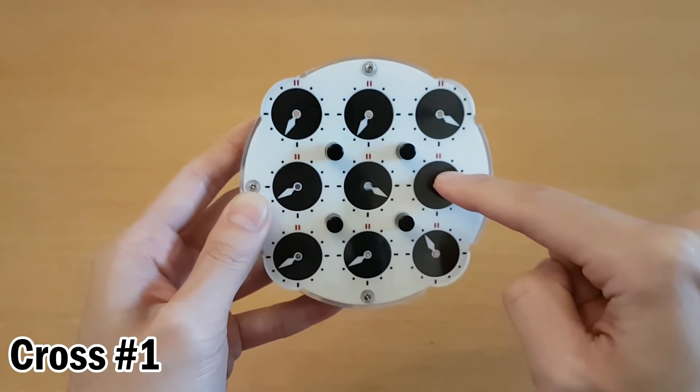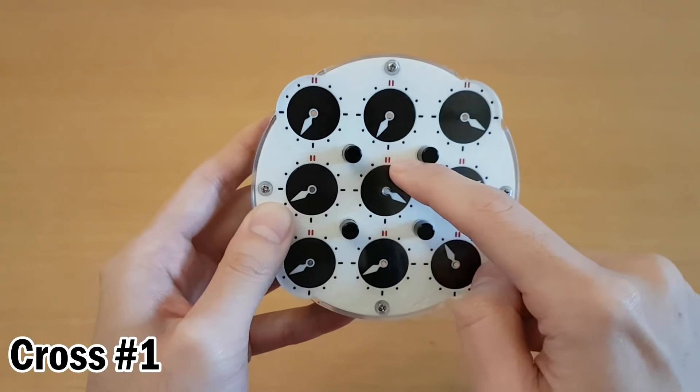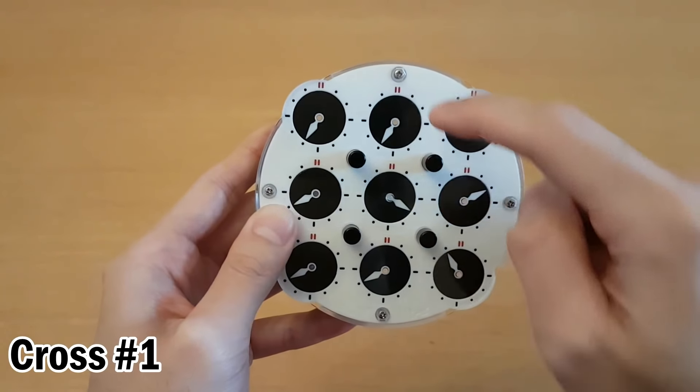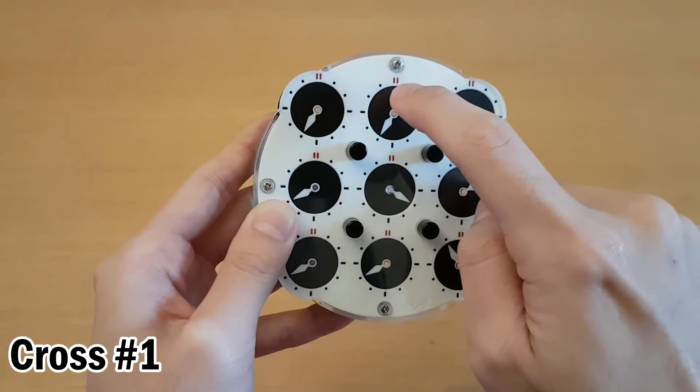To solve it, we start by making the cross on one side. We'll say the center clock counts as solved, and now we want to match this to any of the outer clocks, so I'll match it to this one.